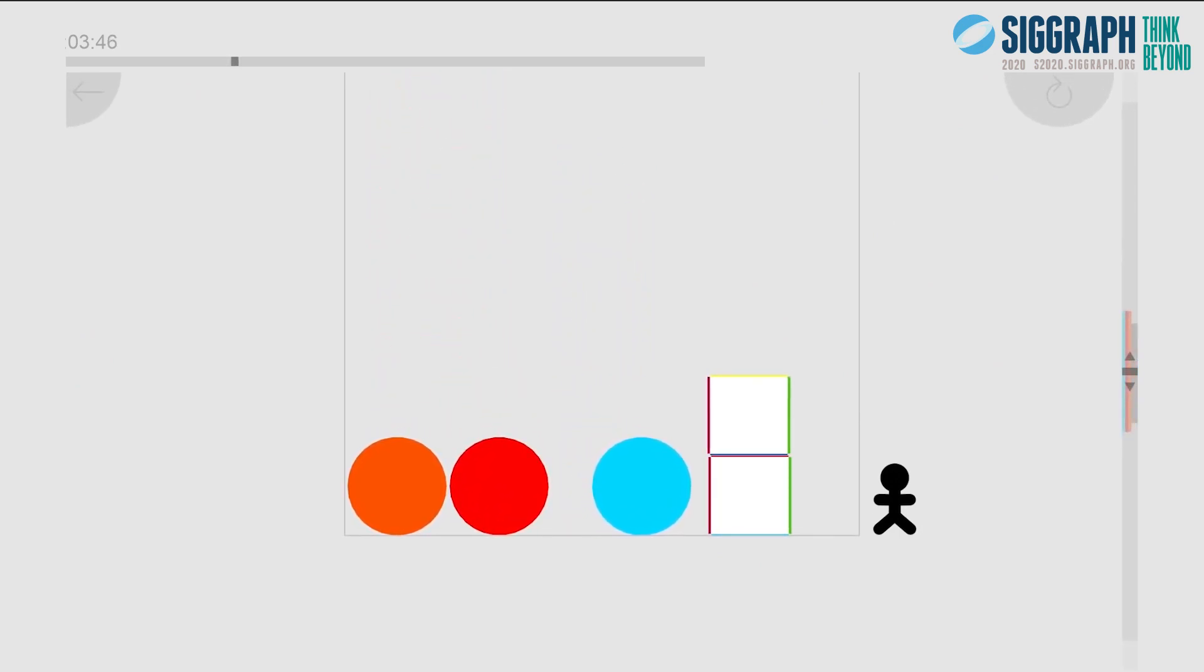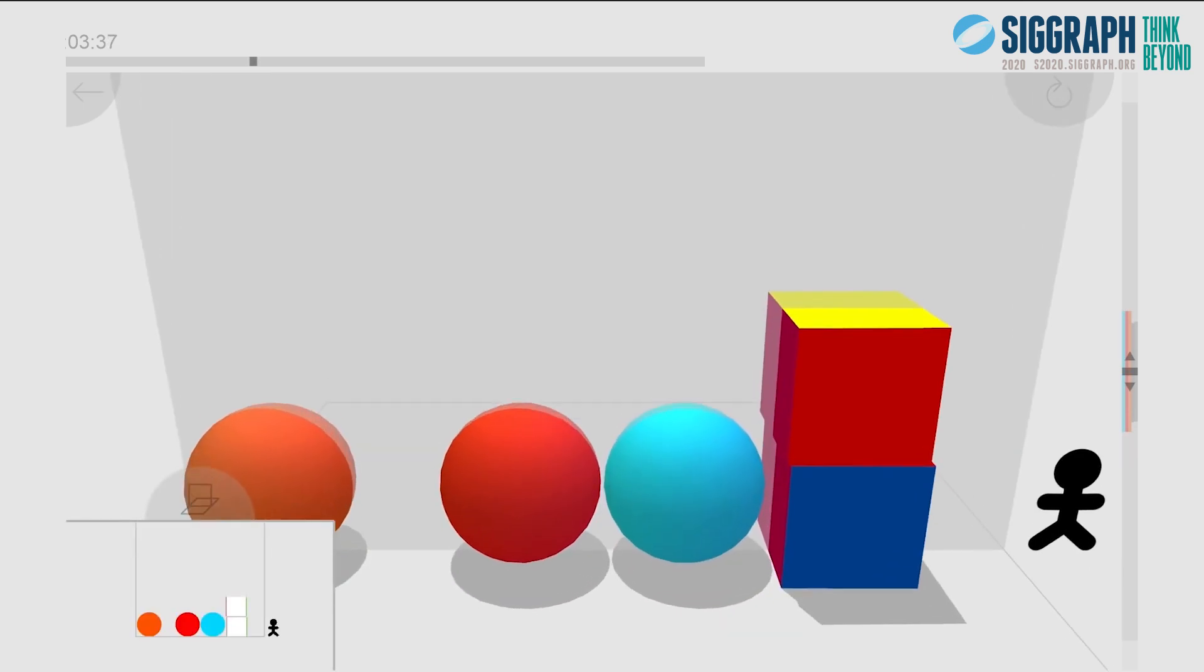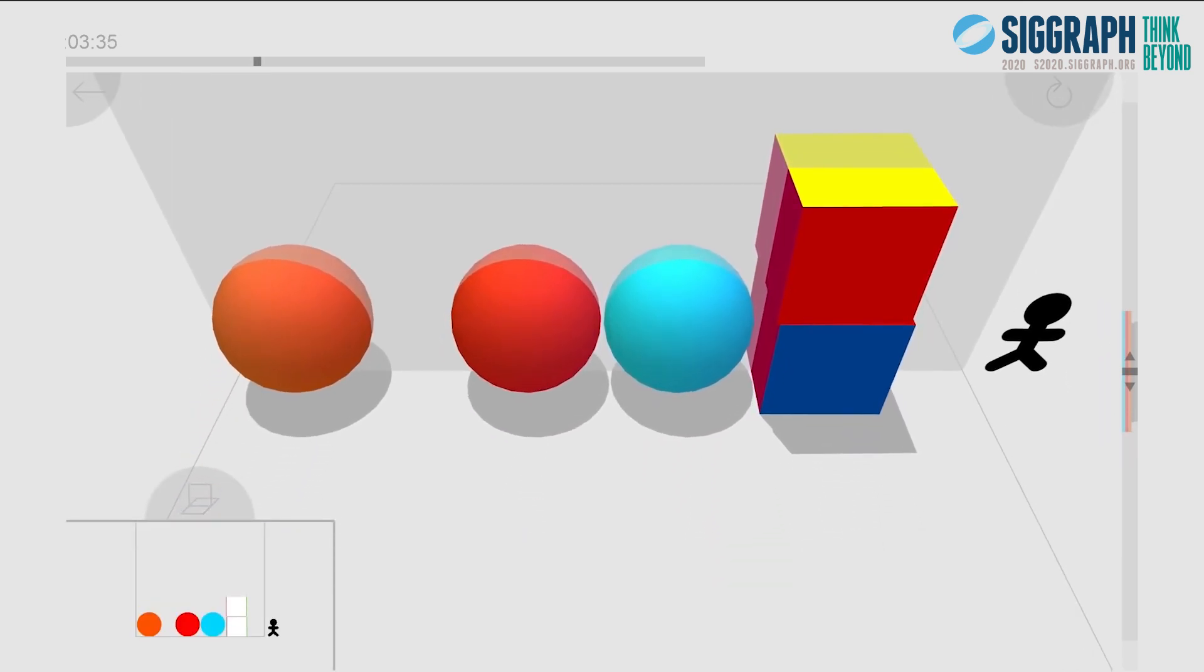Say you are a 2D character and can only see two dimensions: up, down, left, and right. But what if the world was actually 3D and you were just a flat 2D character stuck on a 2D plane?